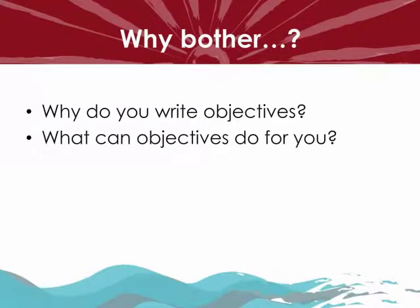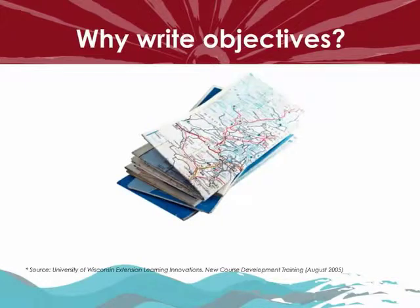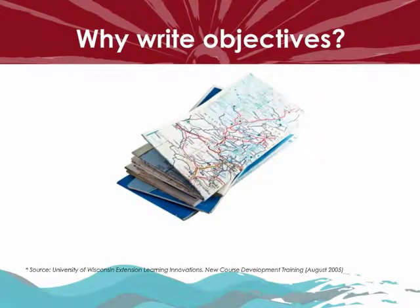Why should we even bother writing objectives, and what can objectives actually do for us? Objectives are considered the roadmap to instruction. When a clear map is laid out, the directions are clear about how to get from point A to point B, so we use objectives to give clear direction on how our instruction will navigate the learning process.